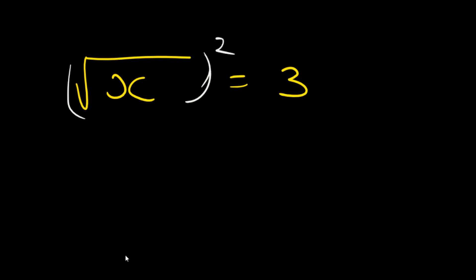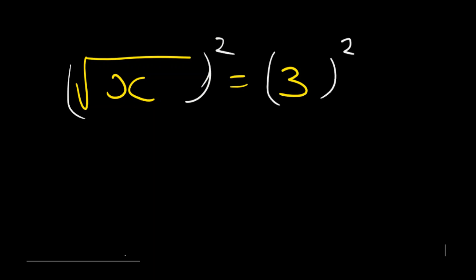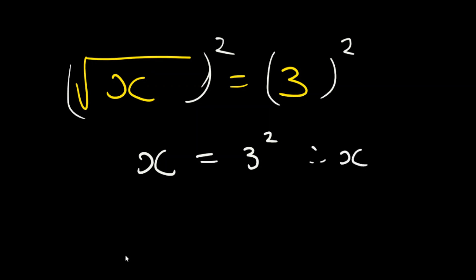By squaring both sides, you're actually removing the square root. So you remain with x equals 3 to the power of 2. Since 3 squared is 9, therefore x equals 9.